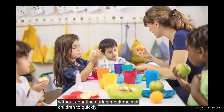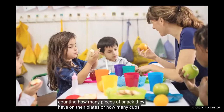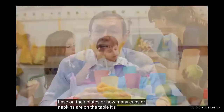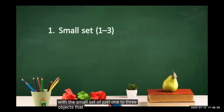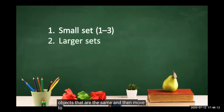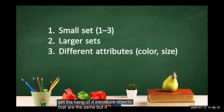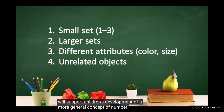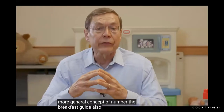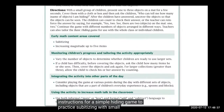During mealtime, ask children to quickly name without counting how many pieces of snack they have on their plates, or how many cups or napkins are on the table. When practicing subitizing, start with a small set of just one to three objects that are the same, then move to larger sets. Once children get the hang of it, introduce objects that are the same but have different attributes, such as colors or sizes, and then eventually unrelated objects. This will support children's development of a more general concept of number. The practice guide also provides instructions for a simple hiding game to practice subitizing with small groups of children.